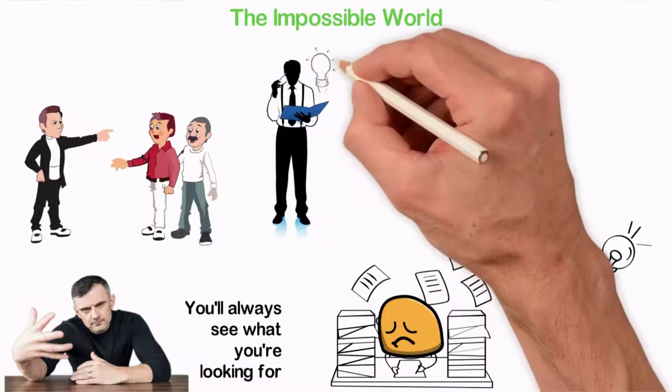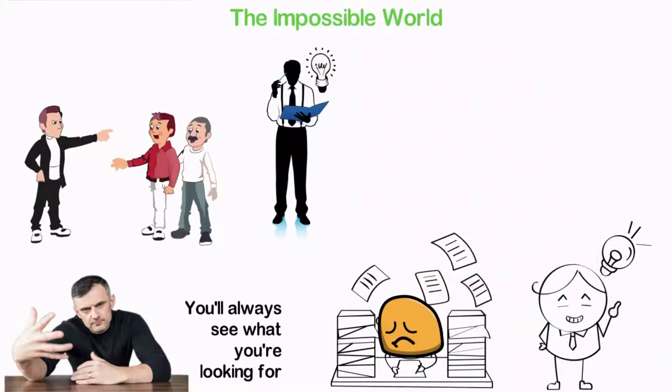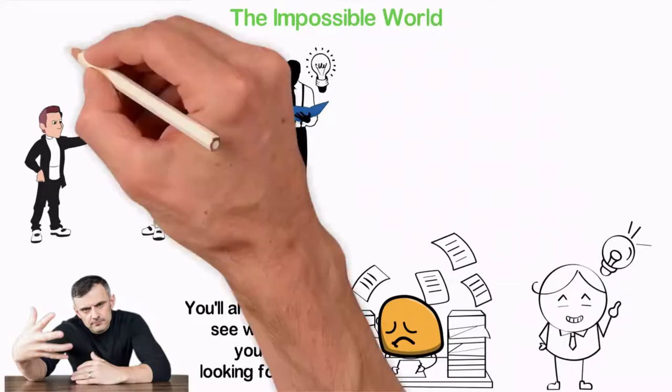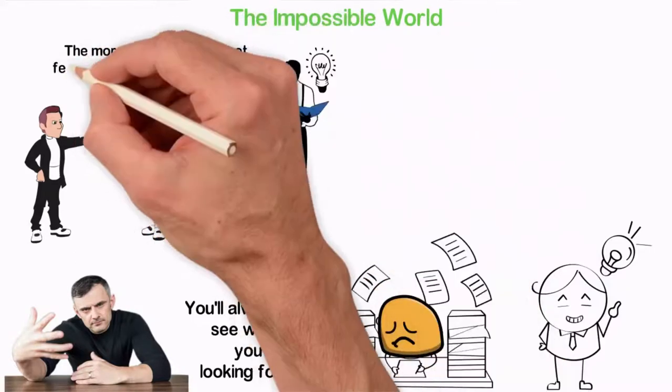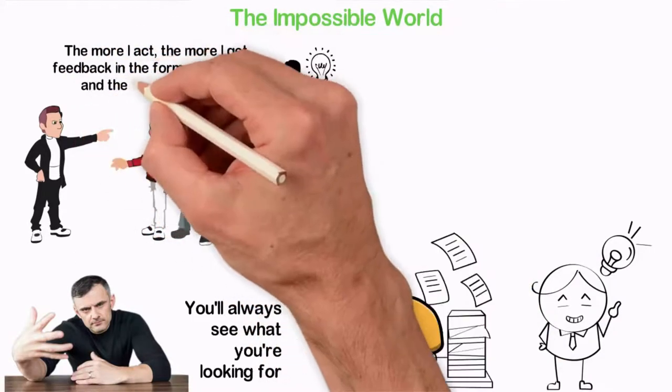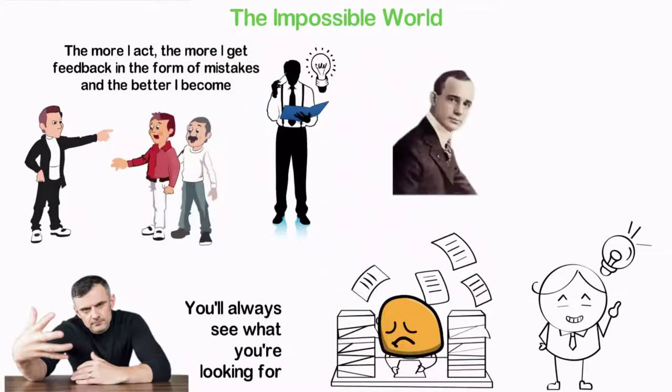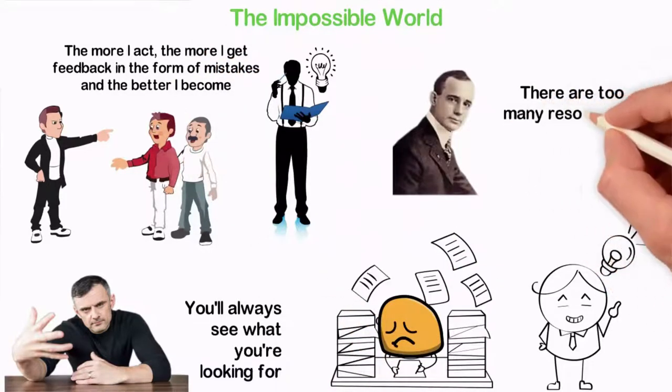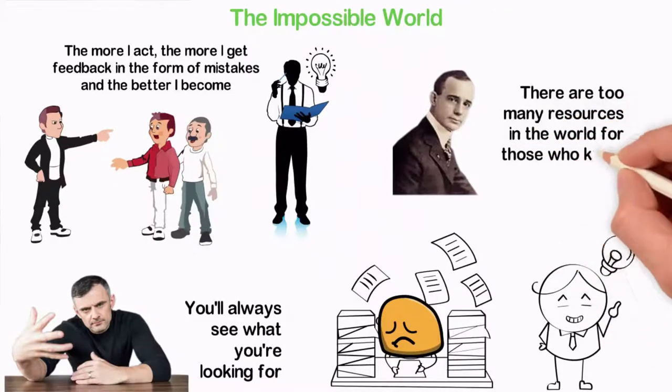As I read, I took actions. As I took actions, I made mistakes and failed. The more I acted, the more I got feedback in the form of mistakes and the better I became. Napoleon Hill said there are too many resources in the world for those who know how to get it, and I can tell you that that's true.